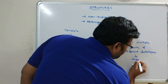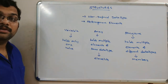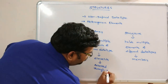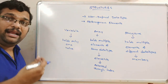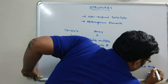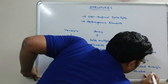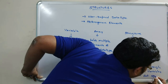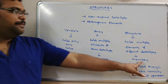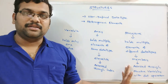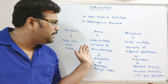In a structure, we call these items members. Array elements can be accessed with the help of index values, whereas structure members can be accessed with the help of structure variables using the dot operator. So the difference is: a variable holds a single value, an array holds multiple elements of the same data type, and a structure holds multiple elements of different data types.